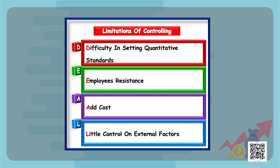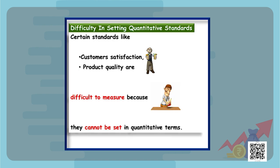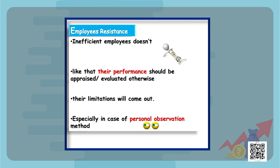Now let's discuss the limitations of controlling. The first limitation is difficulty in setting quantitative standards. Certain standards like customer satisfaction and product quality are very difficult to measure in quantitative terms. Hence the management should take steps to set standards in terms of quantities.